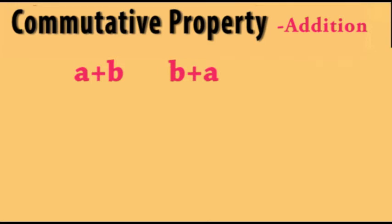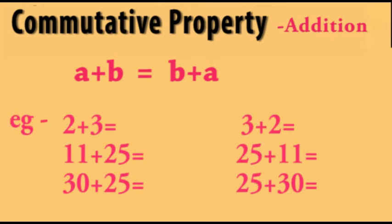The result for both will be equal. For example, 2 plus 3 is equal to 5, and by changing the order, 3 plus 2 is also equal to 5. Similarly, 11 plus 25 is equal to 36, and by changing the order, 25 plus 11 is also equal to 36.